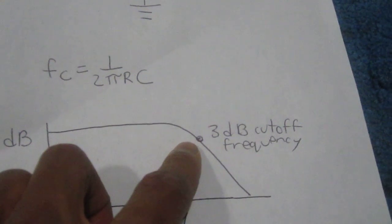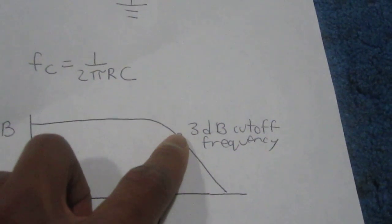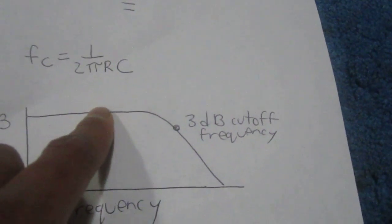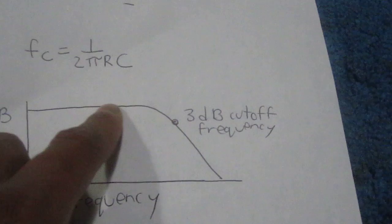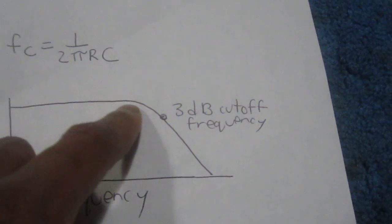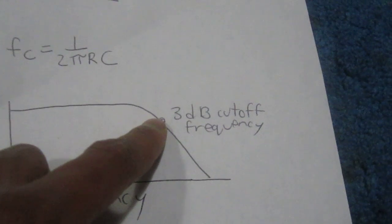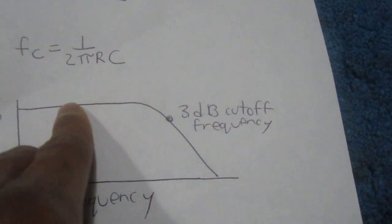And in mathematical terms, that 3dB point represents about 0.7 volts of the peak amplitude that was achieved before. So at this point the signal declines 3dB or it declines to 0.7 volts of the peak amplitude.